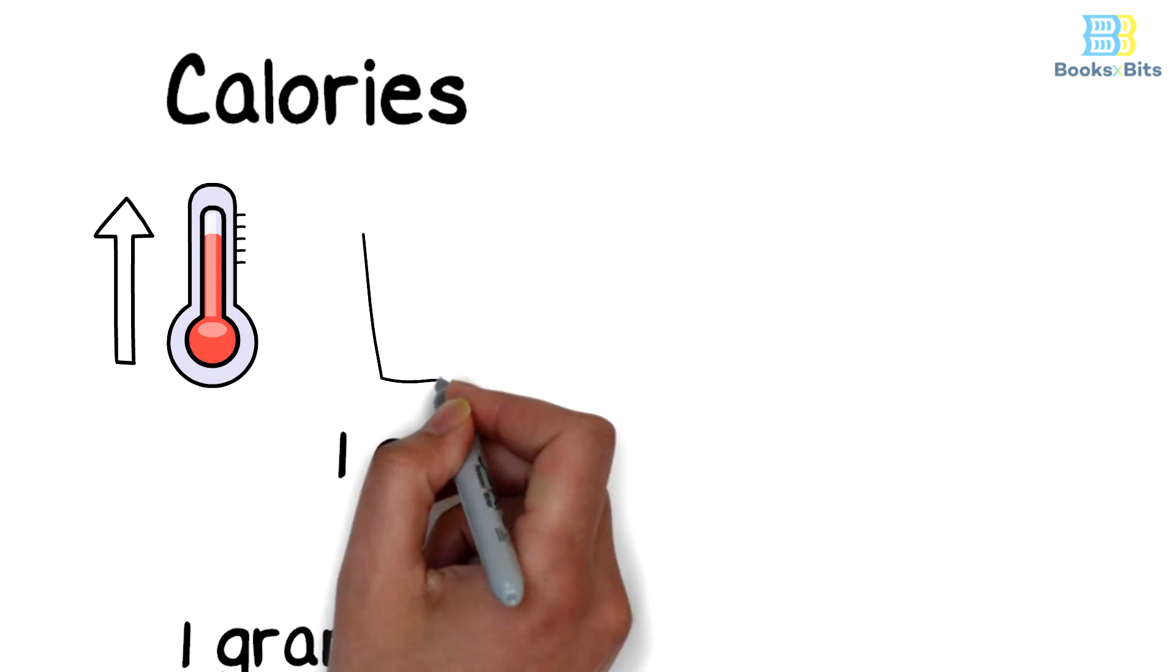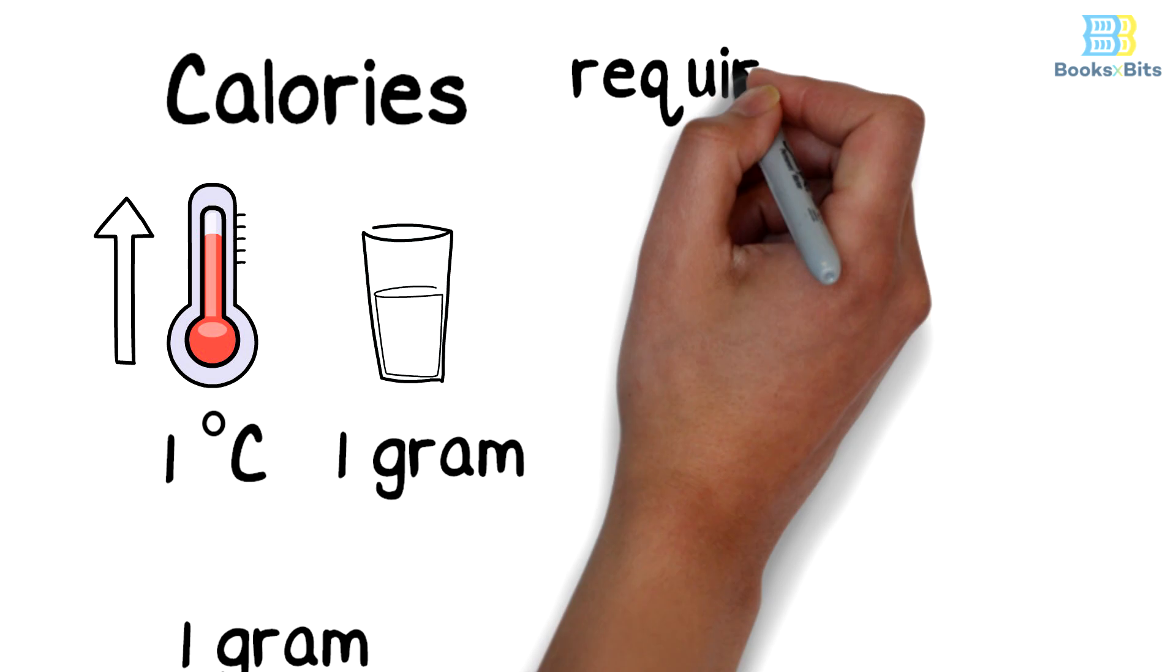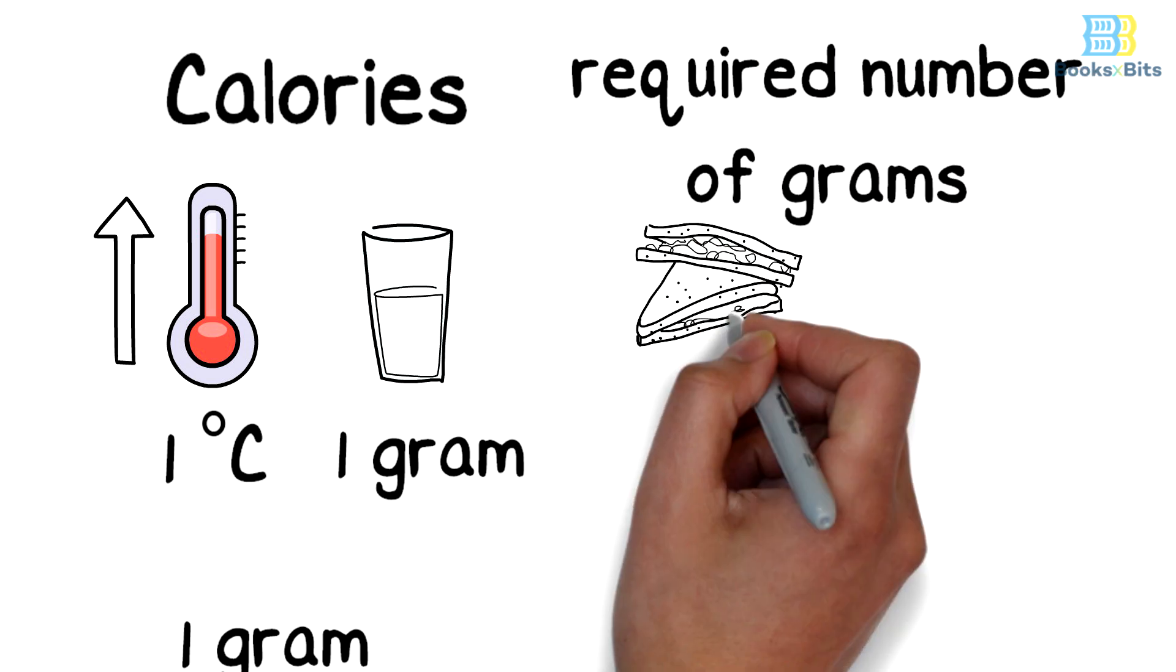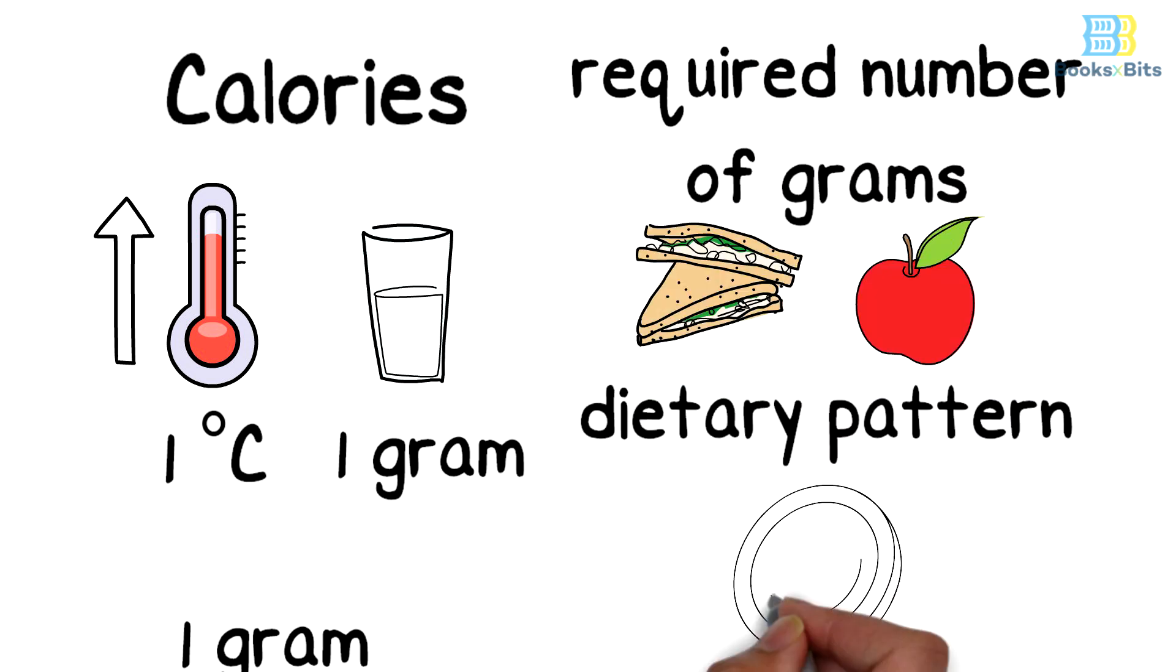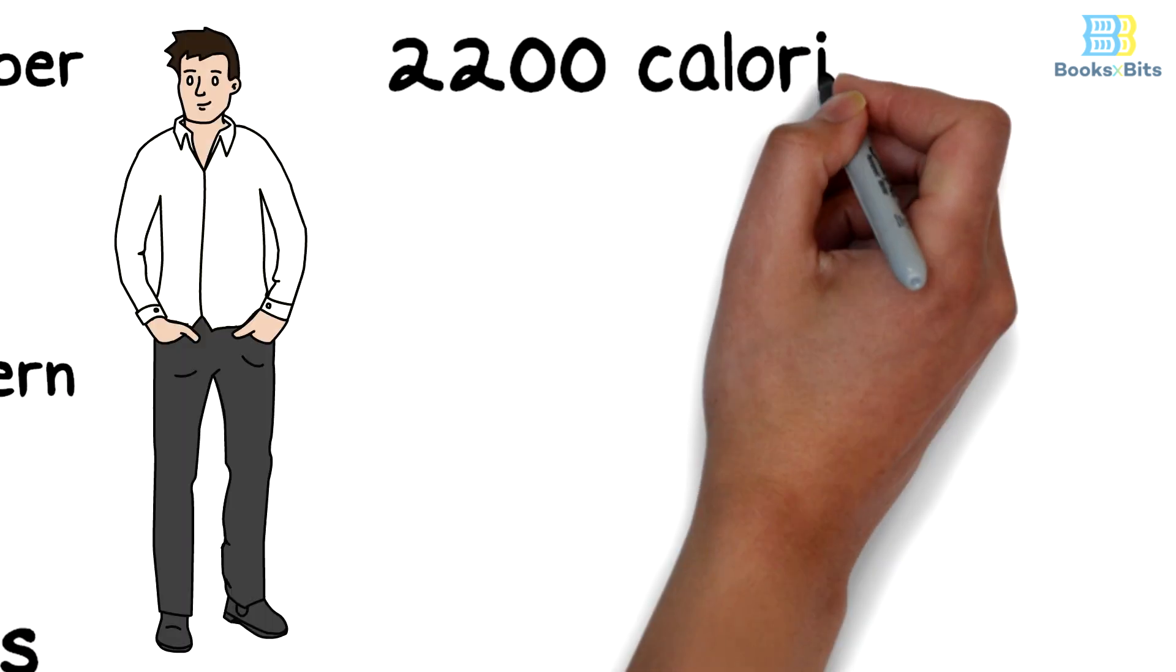The required number of grams of energy-boosting foods depends on the dietary pattern and the desired goal of nutrition. For example, if a person needs 2,200 calories a day and follows a diet in which